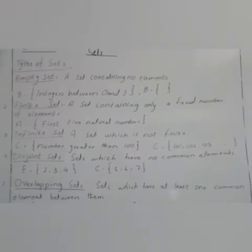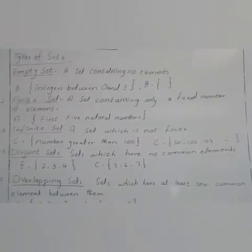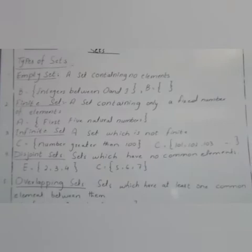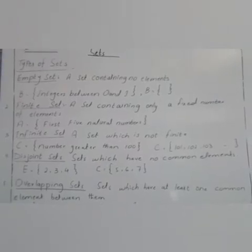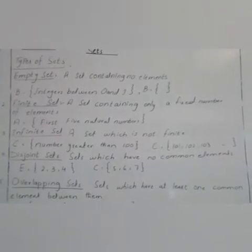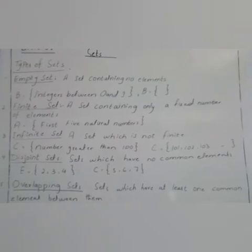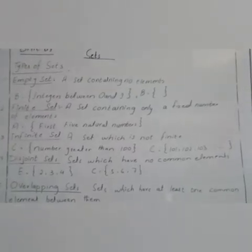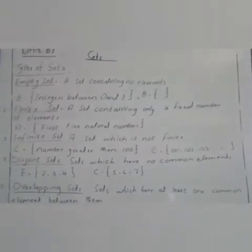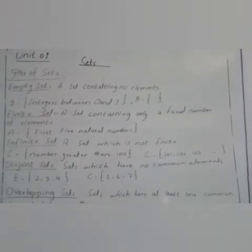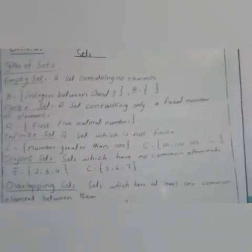Disjoint sets. Sets which have no common elements. E is equal to 2, 3 and 4. C is equal to 5, 6, 7. Two sets are called disjoint sets when they have no common elements. Set E and set C have no common elements. That's why these are disjoint sets.